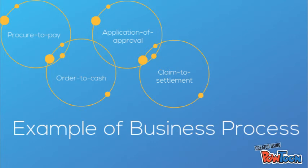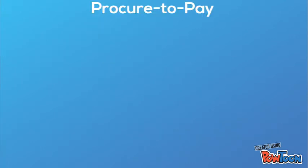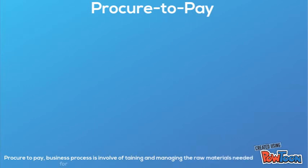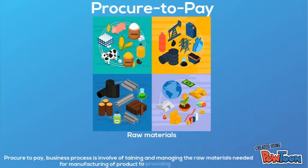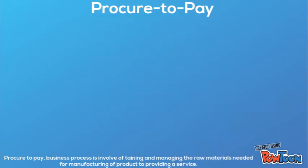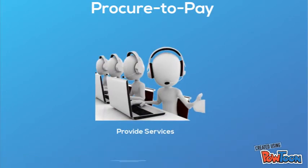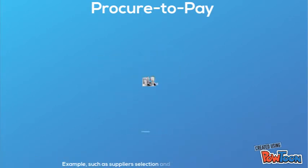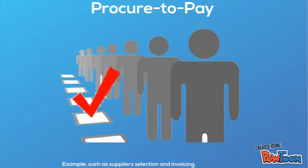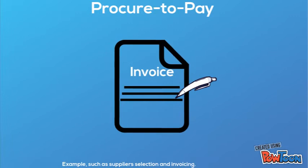Examples of business processes. Procure to pay: business processes that involve obtaining and managing the raw materials needed for manufacturing a product or providing a service. Examples include supplier selection and invoicing.